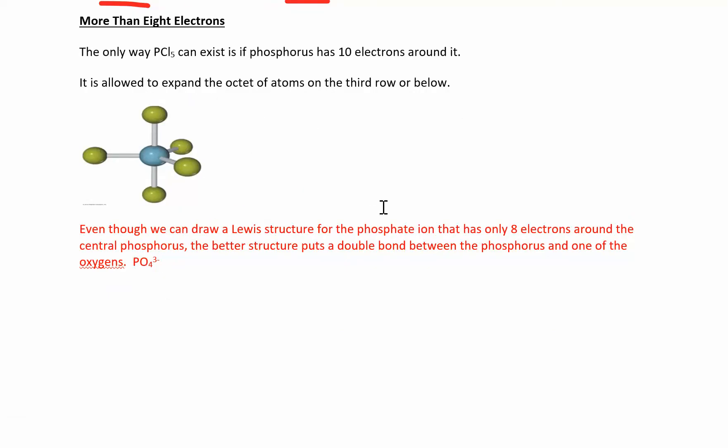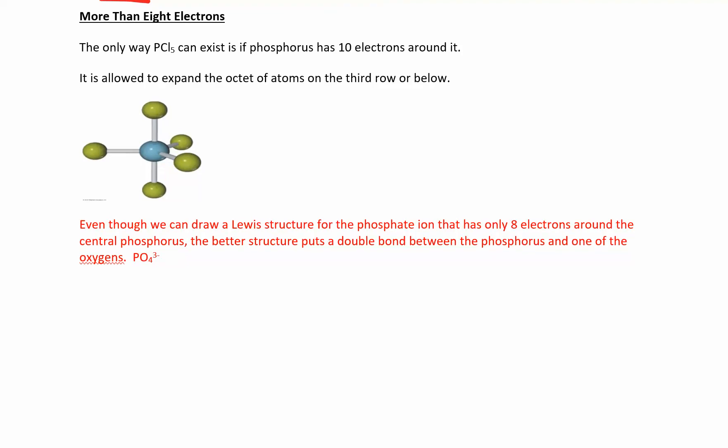So something like PCl5, you do the Lewis structure for PCl5. Phosphorus has five, chlorine has seven. I have five of those. That's 35 and 5 gives me 40. So I put the phosphorus in the middle and then I have chlorine, chlorine. And I used up 2, 4, 6, 8, 10. I have 30 left over. 4, 6, 8, 10, 12, 14, 16, 18, 20, 22, 24, 26, 28, 30. I'm out of electrons.